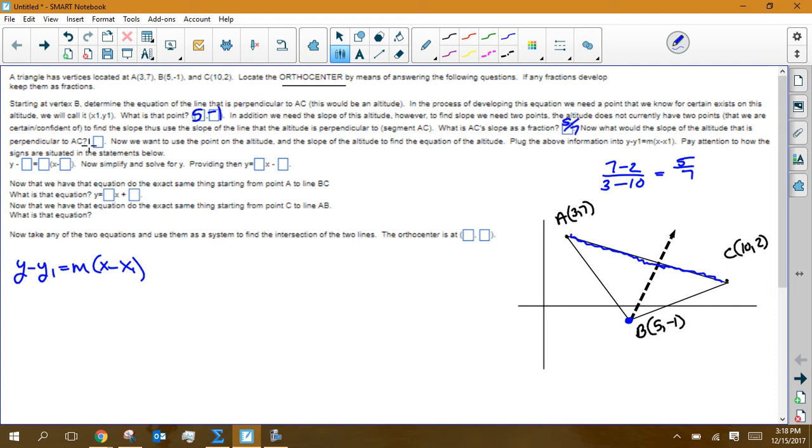So you get 5 sevenths. So that's what 5 sevenths goes there. The next question says, now what is the slope of any line that's perpendicular to it? So that's addressing the slope of this dotted line. And the slope of that dotted line then would be the opposite sign reciprocal of 5 sevenths. So this would be negative 7 fifths. Let me backtrack. 3 minus 10 is negative 7. So that's 5 over negative 7. So it's negative 5 sevenths.